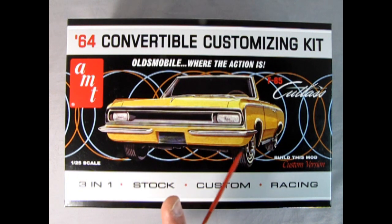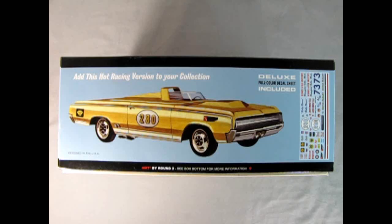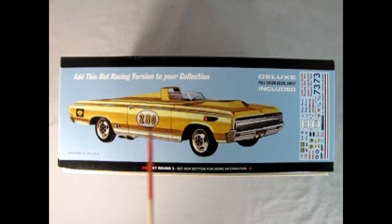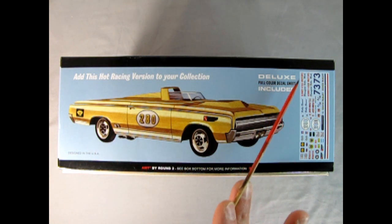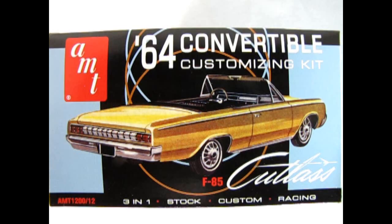You can build this mod customizing version as shown on the box. Add this hot racing version to your collection. Here we can see the Bonneville style racing Oldsmobile with the chopped down windshield and the roll bar and the tonneau cover and the bulged up hood as well as the screen in the front for catching any bugs. We also have these really cool mag wheels and the side exhaust dumps.